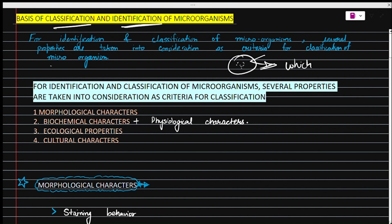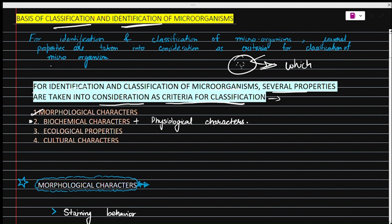For the identification and classification of microorganisms, several properties are taken into consideration as criteria. These are: morphological characters, biochemical characters, physiological characters, ecological properties, and cultural characters.